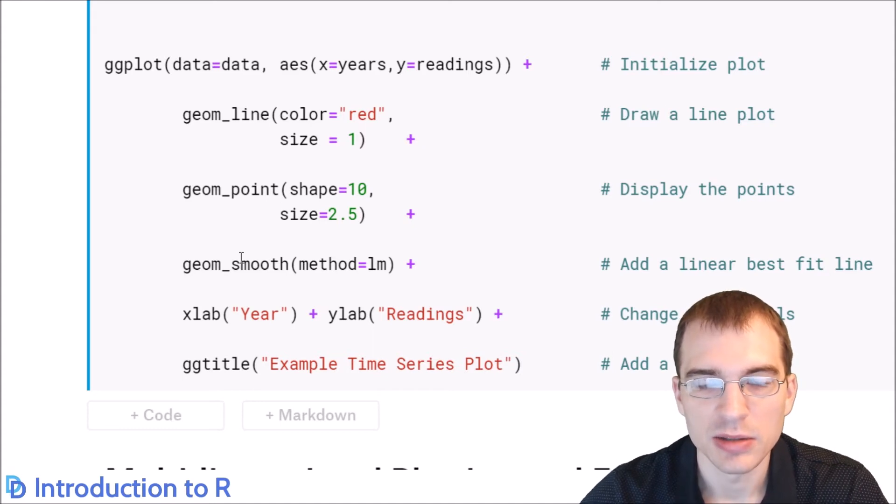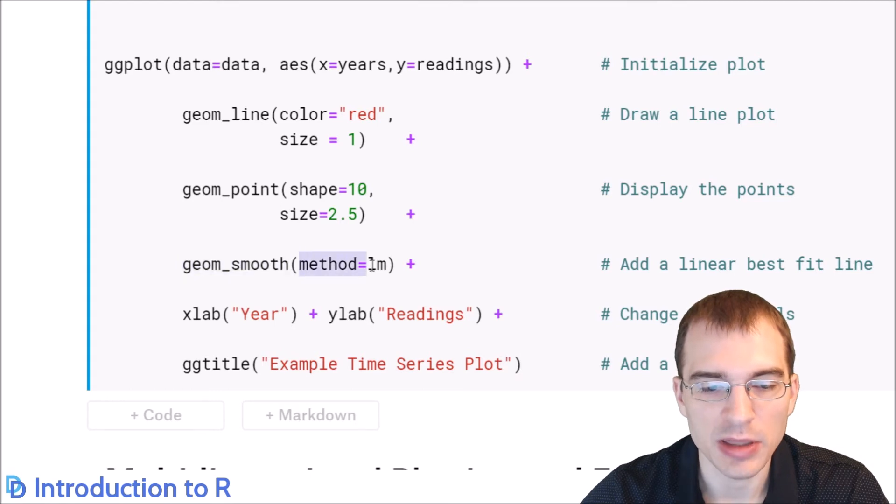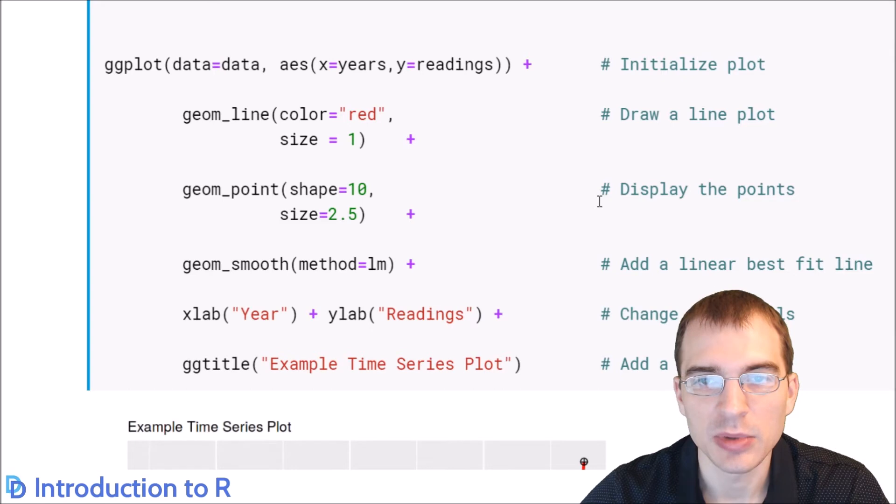In ggplot2, you don't need to create a line of best fit manually yourself. There's functions to do that automatically. You can pass in geom_smooth and set the method to linear model, and that will automatically fill in a line of best fit for you. Then we'll just pass in some labels with xlab and ylab and a title. When we run this, we'll essentially recreate the exact same line plot we made last time with base R plotting, but just in an easier way. And it might look a little bit better.